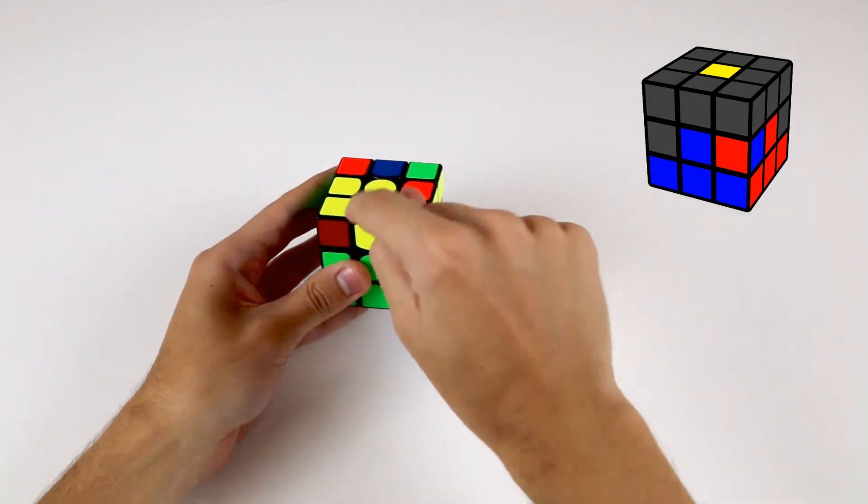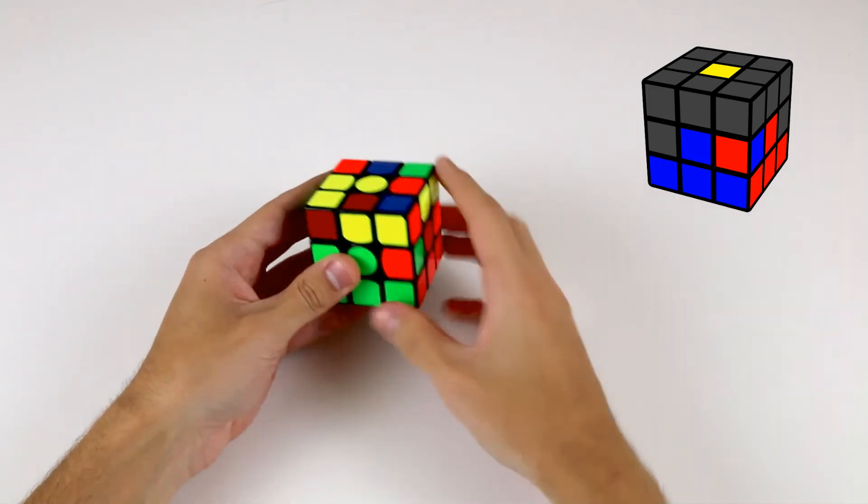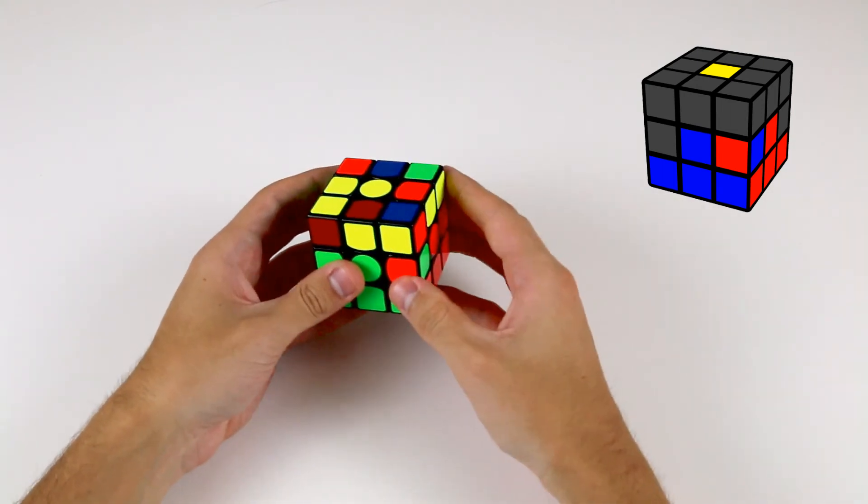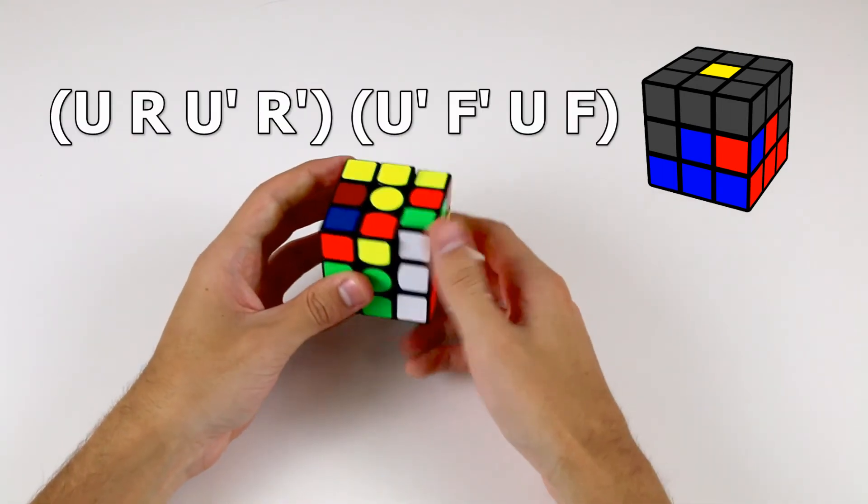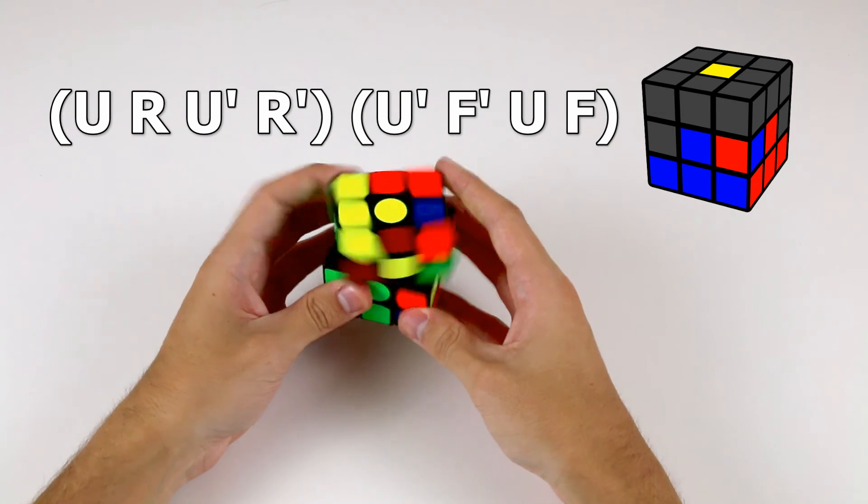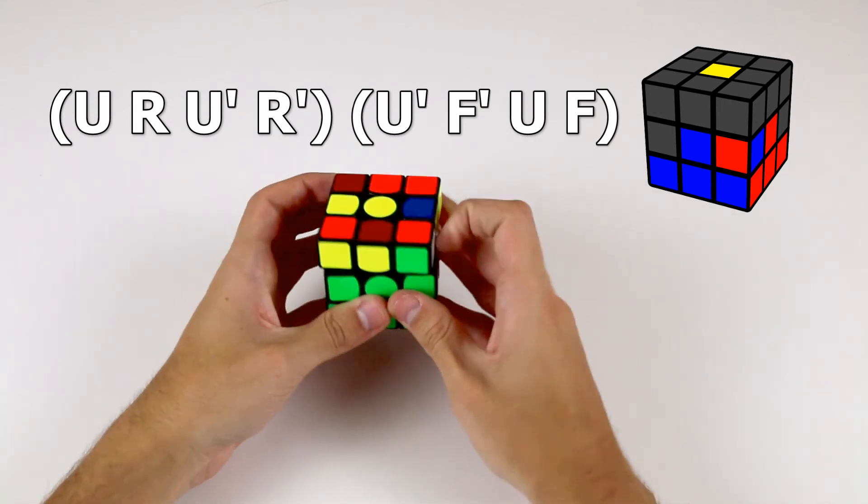We just take one of the top layer edges and put it in there, just so we can take that one out. So putting this one to the right, U R U' R' U' F' U F.